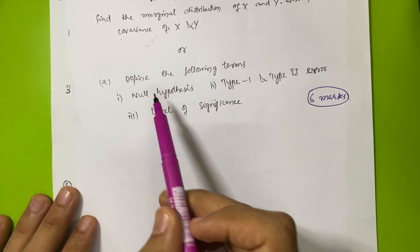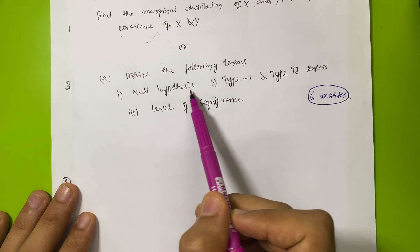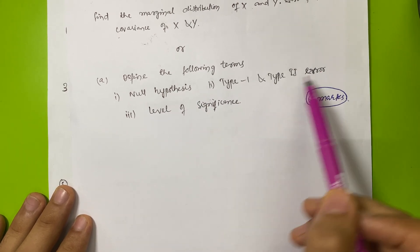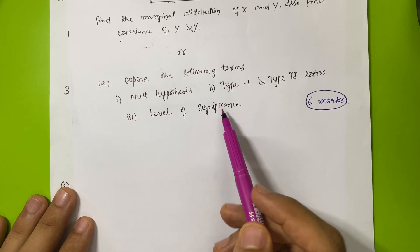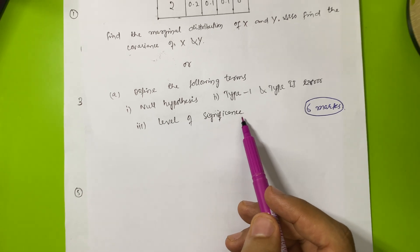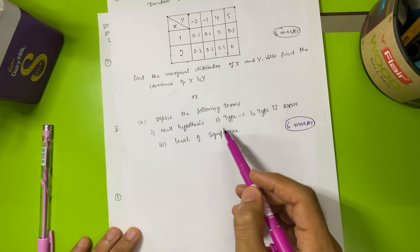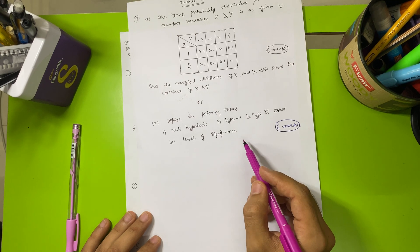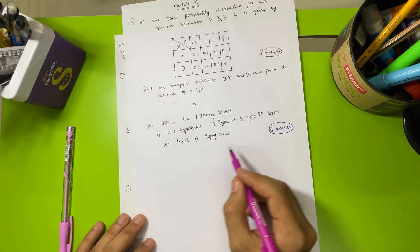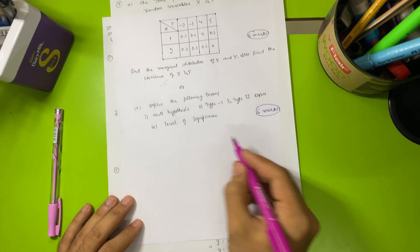If you find difficulty in this particular question, you can refer its B part. They will ask the theory portion. The important questions are: null hypothesis, type one and type two error, level of significance, and standard error. You have to refer this theory part to clear M4 in an easy manner.